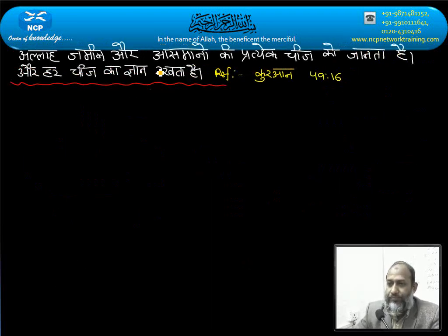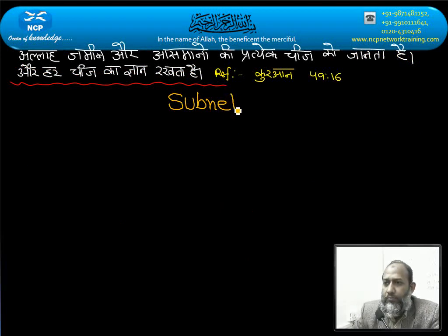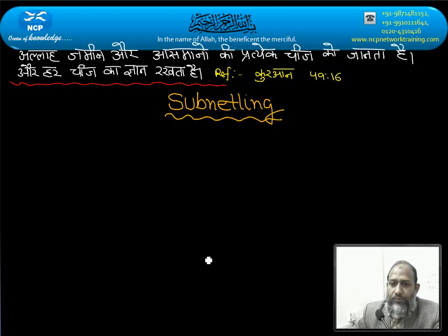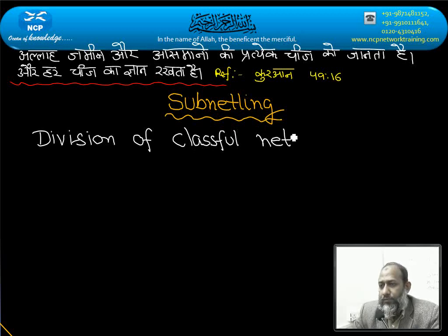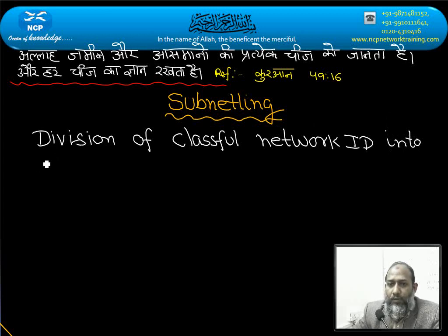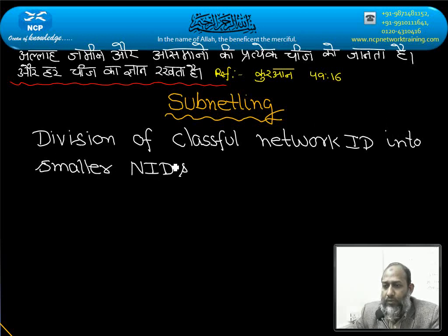Next topic is subnetting. Subnetting means division of a classful network ID into smaller network IDs of the same mask.